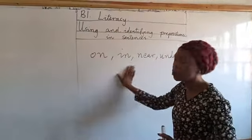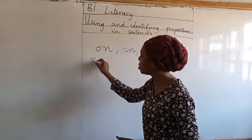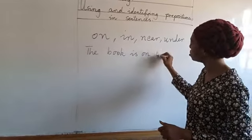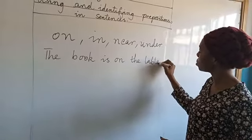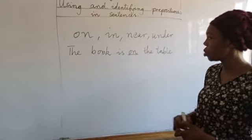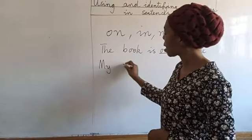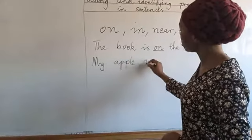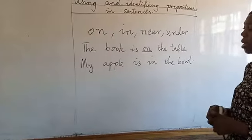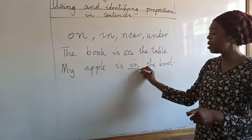So we are going to use these four prepositions and form sentences. Let's take 'on'. I can say: the book is on the table. So where is the position of the book? The book is on the table. Now let's use 'in'. I can also say: my apple is in the bowl. Where is the position of the apple? In the bowl.